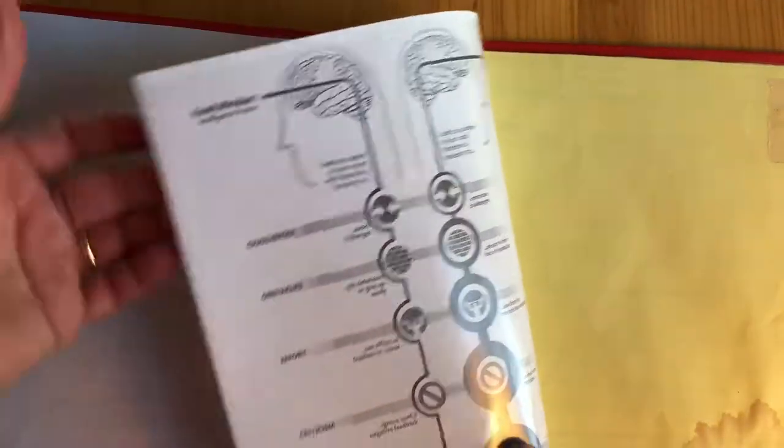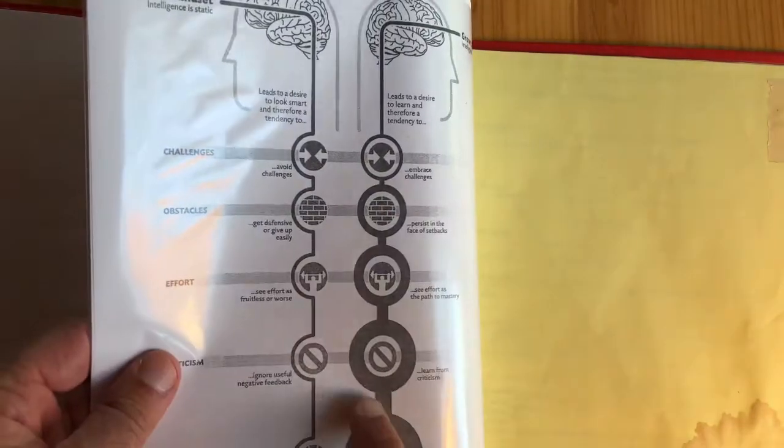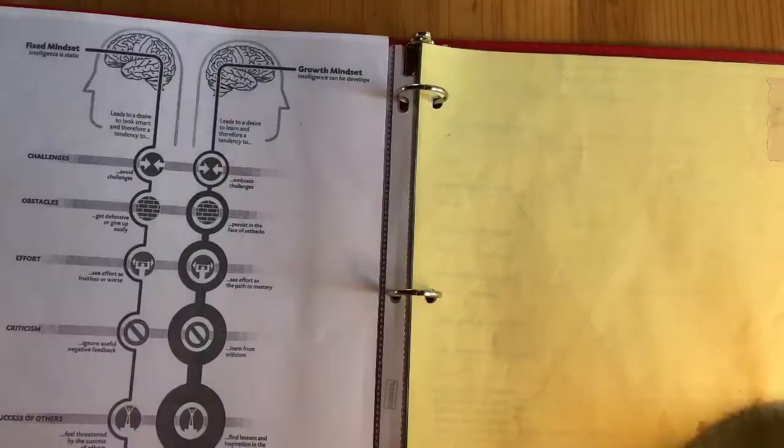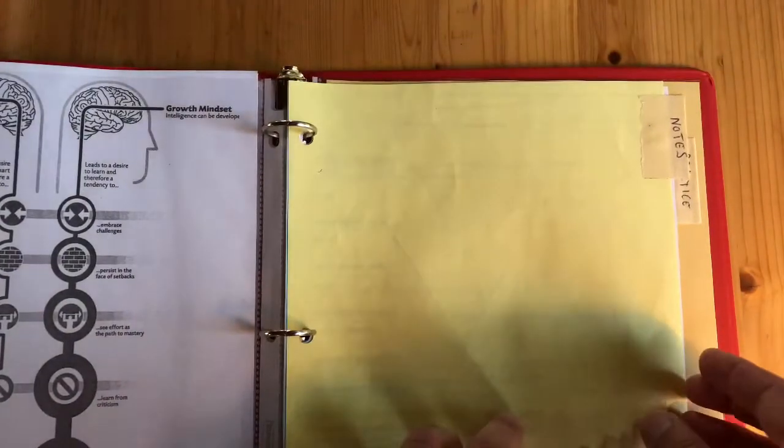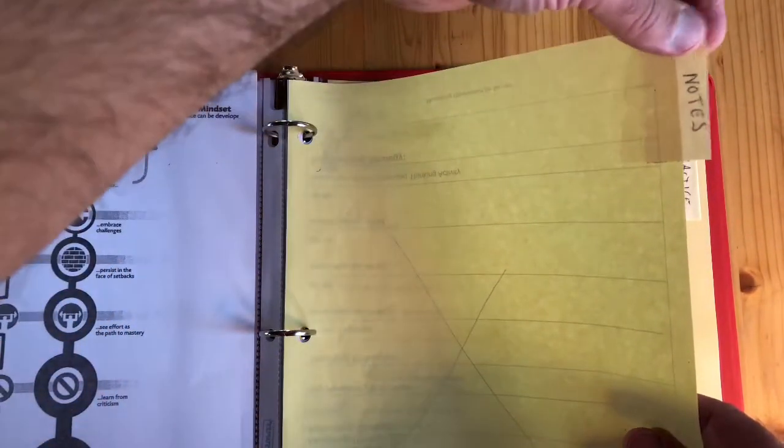Slipped in there, you want to make sure you put your mindset page talking about mindsets. Next we have our notes section. Take a piece of scratch paper, we put some tape as a divider and make sure it's labeled with notes.